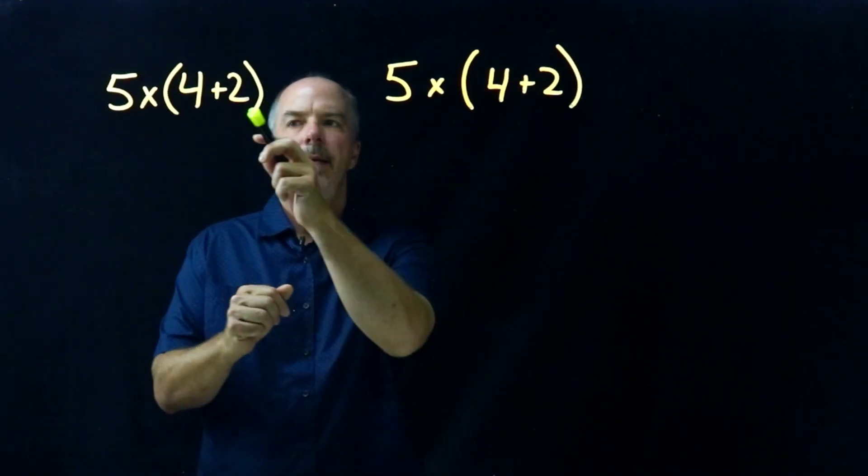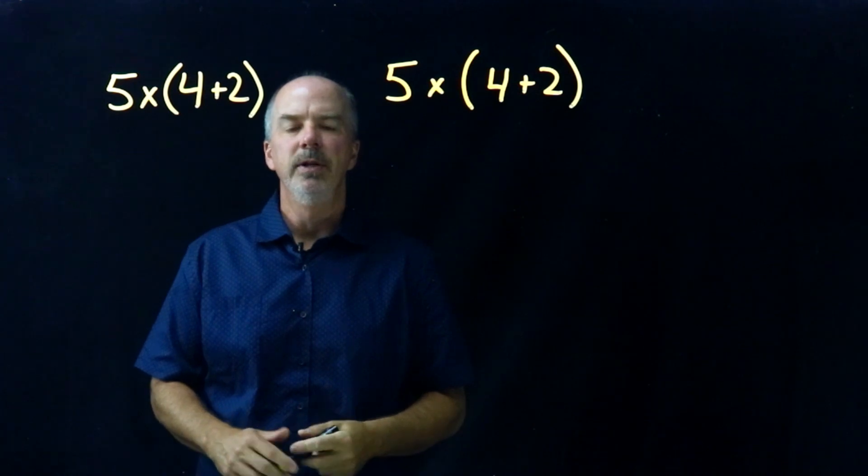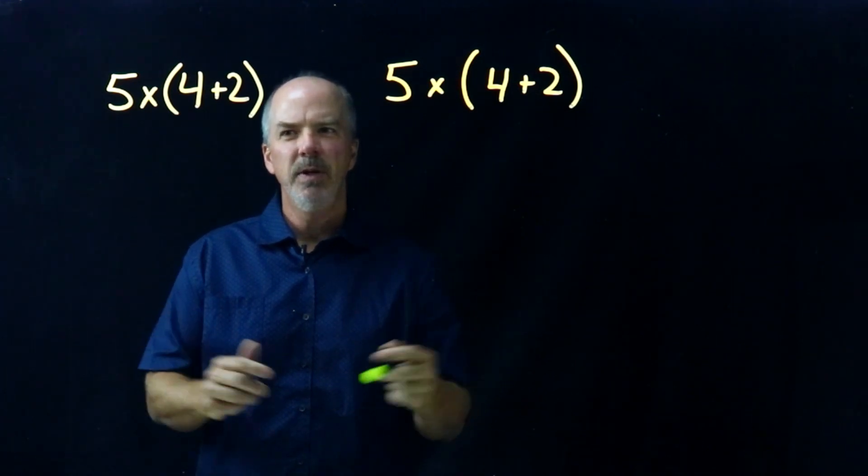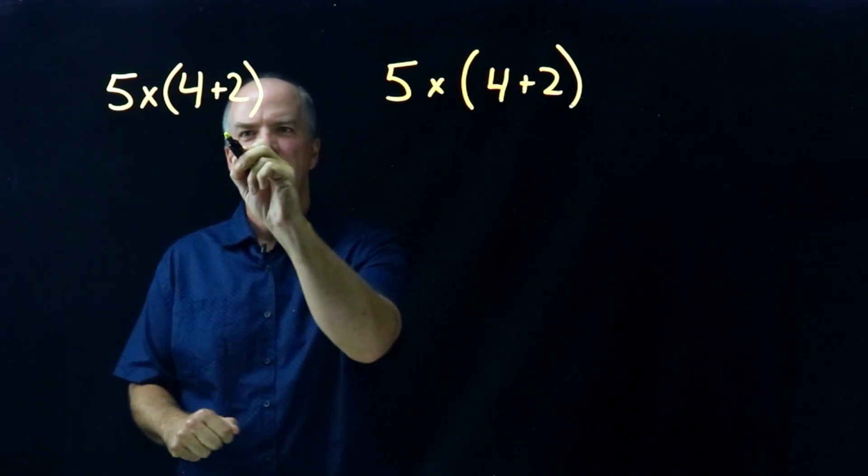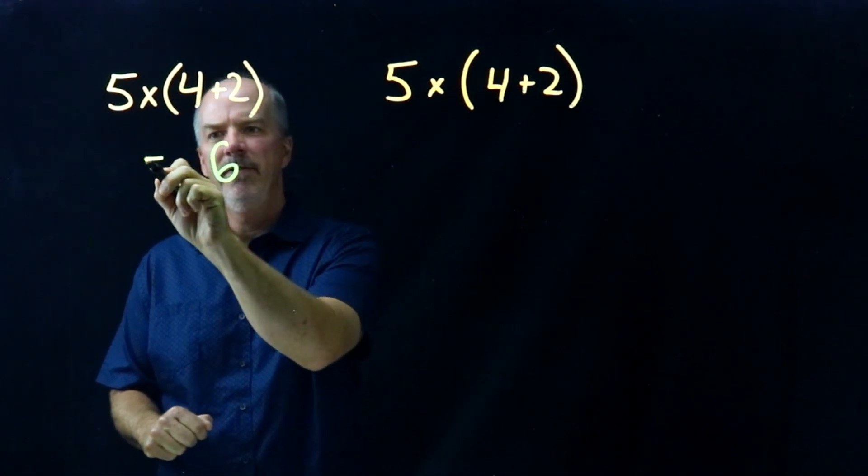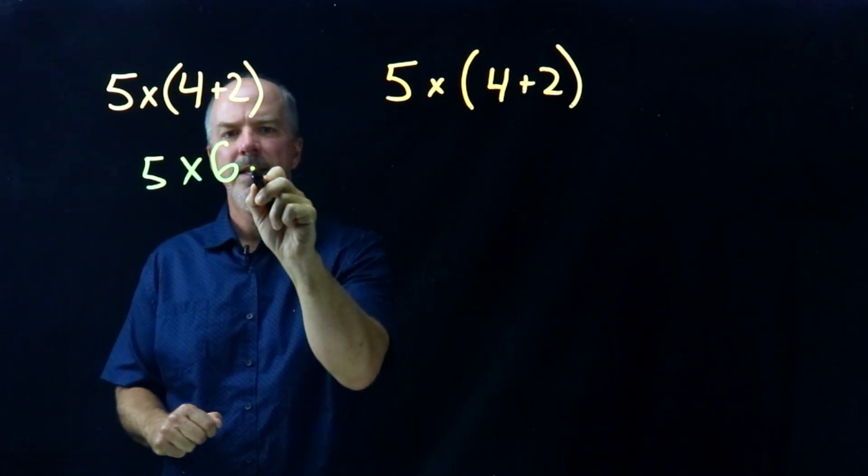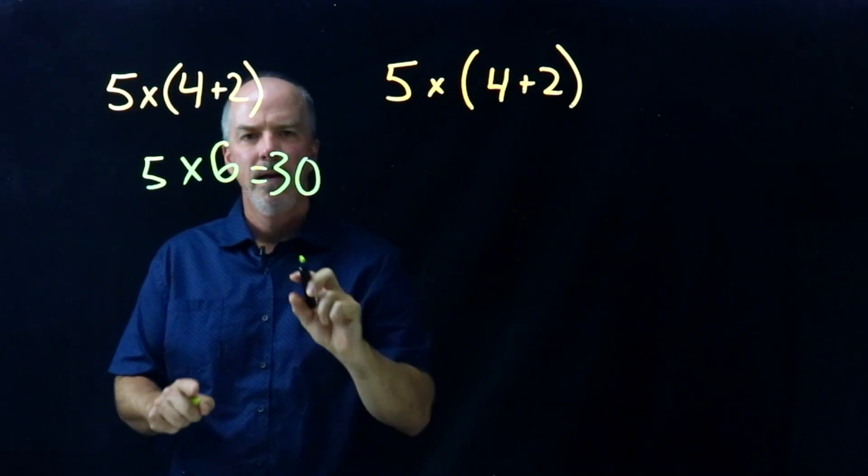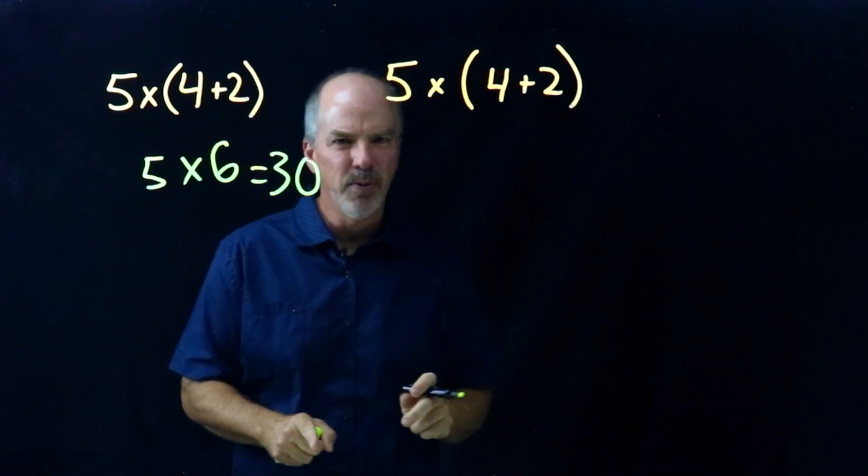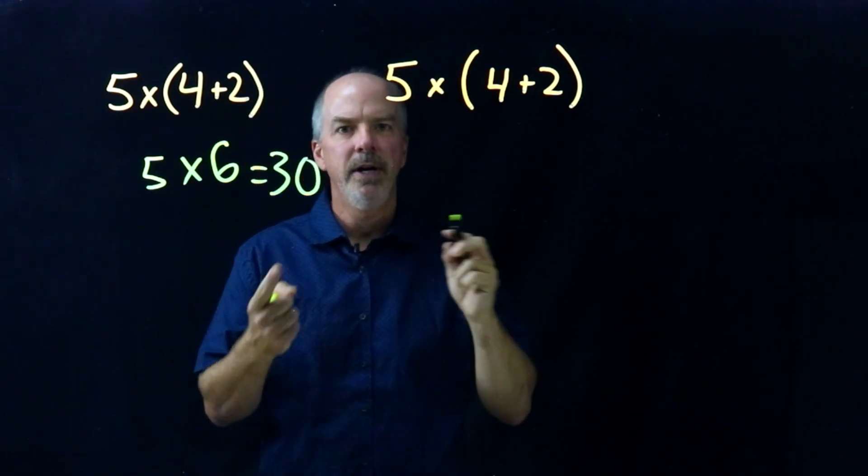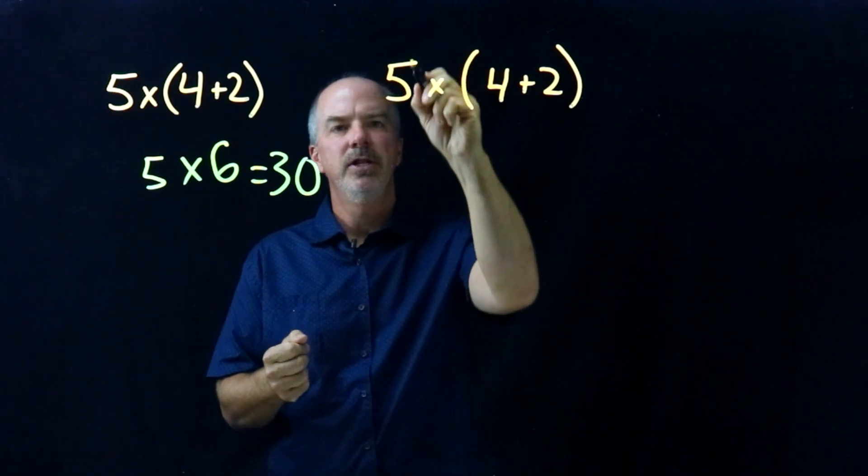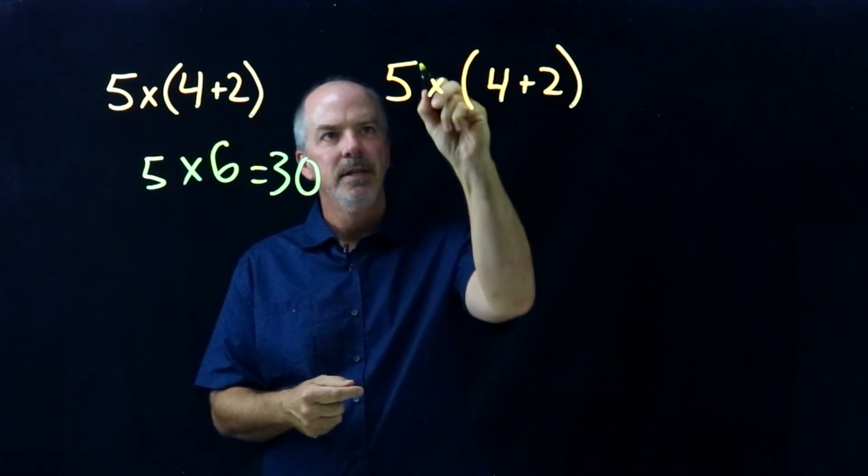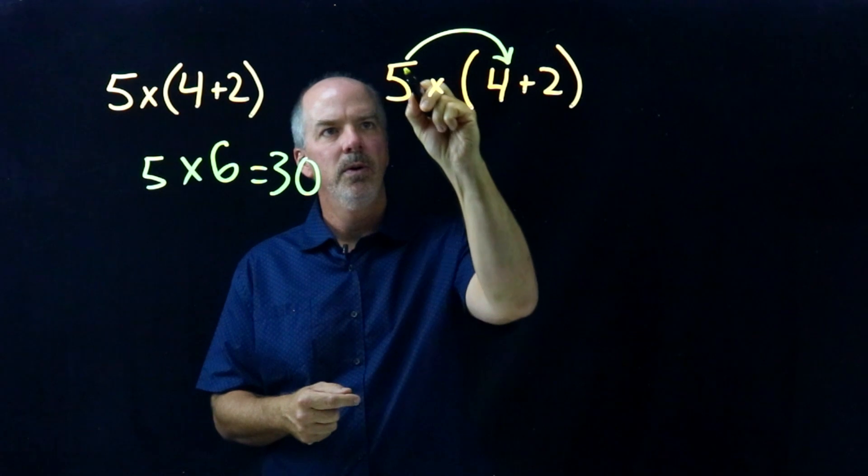Five times four plus two. If we use the order of operations, we would do four plus two first. We would have six, and we'd have five times six, and that equals thirty. But if we're told to use the Distributive Property, which we're learning now, we would distribute the five into the parentheses. So five times four,